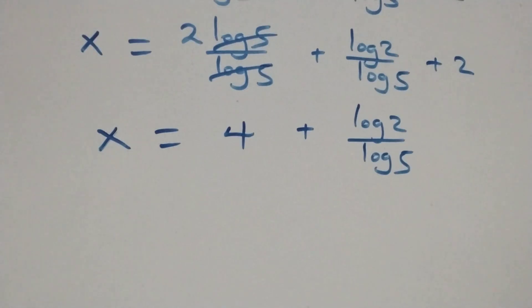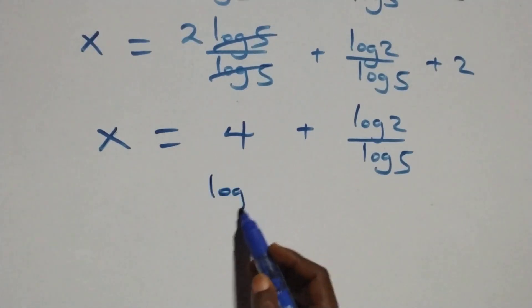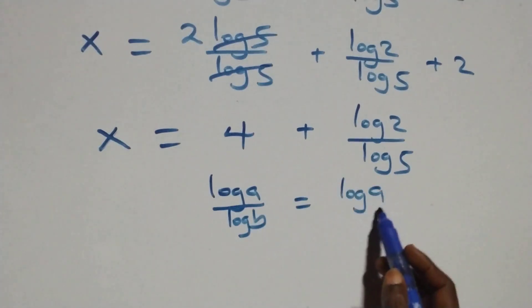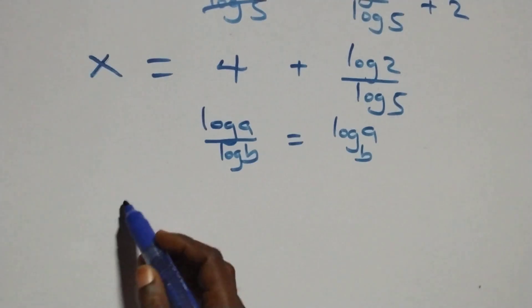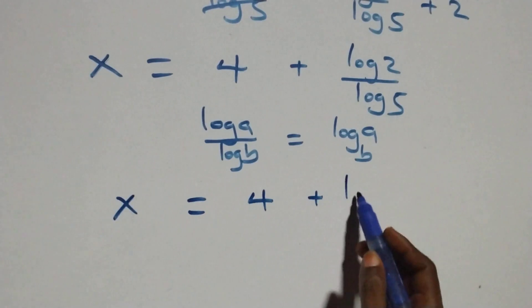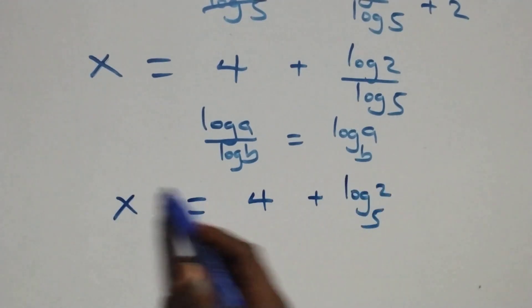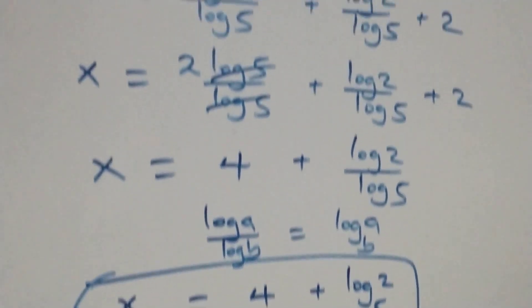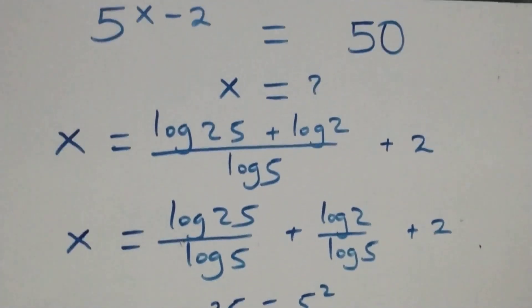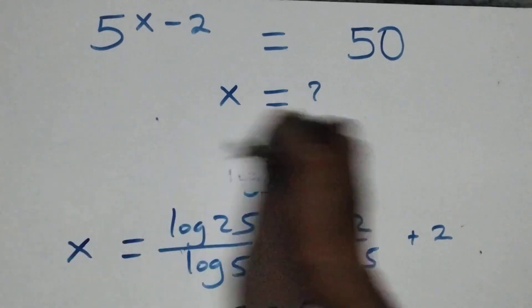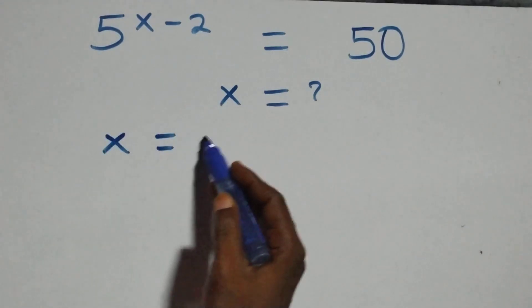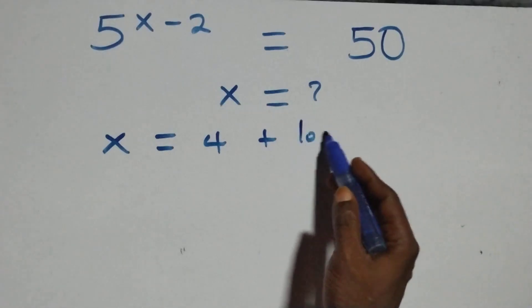Here we apply the change of base rule: log a over log b is the same thing as log a to base b. Applying this, x equals to 4 plus log 2 base 5.